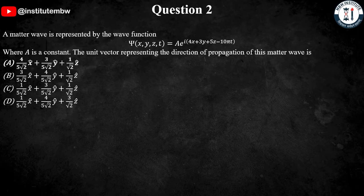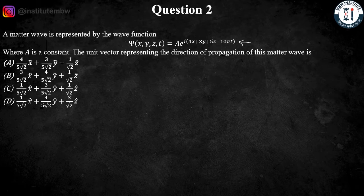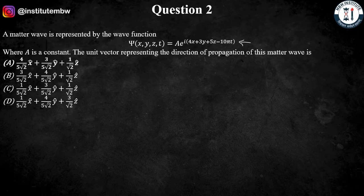A matter wave is represented by the wave function ψ(x, y, z, t) = A e^(i(4x + 3y + 5z - 10πt)), where A is a constant. We have to find out the unit vector representing the direction of propagation of this matter wave.